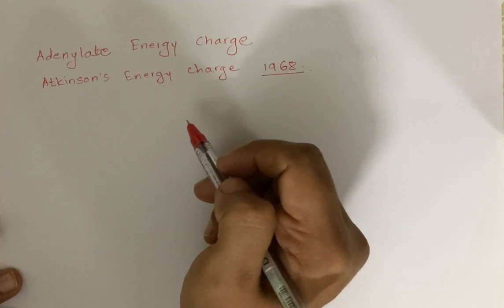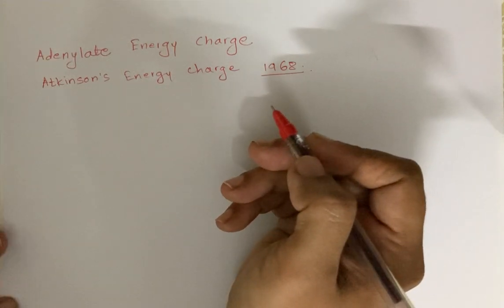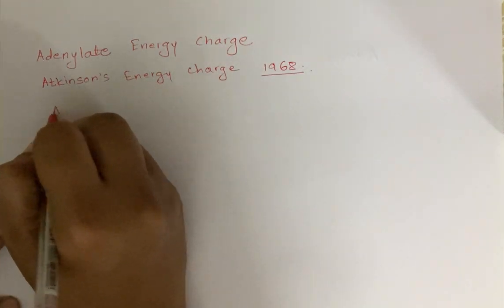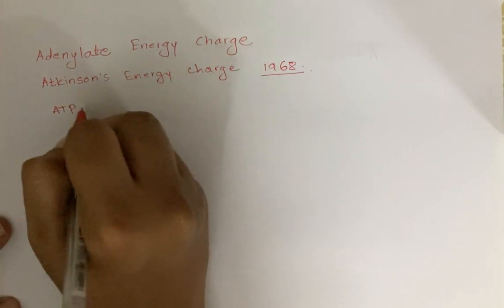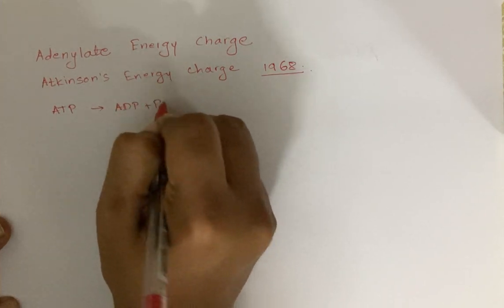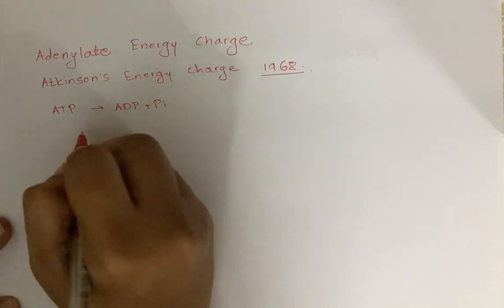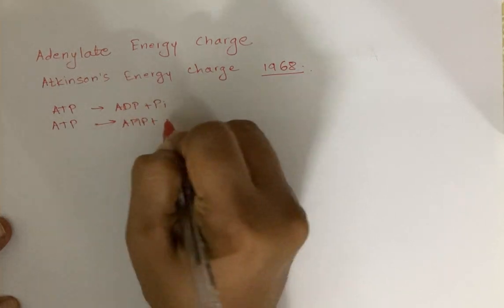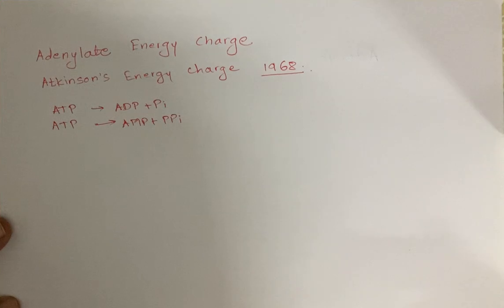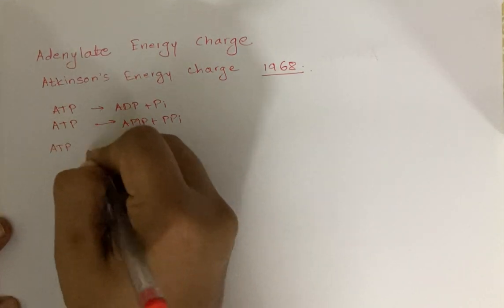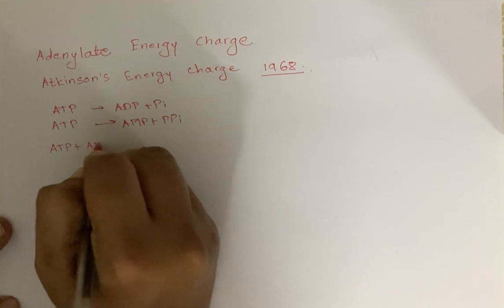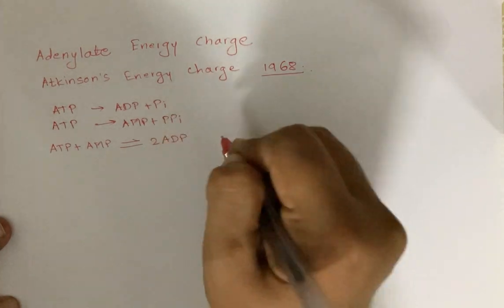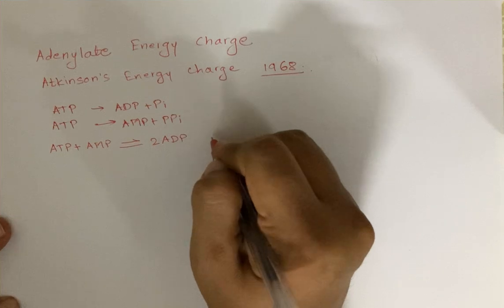We need to understand that energy is present in many forms in a cell. ATP gets converted to ADP plus inorganic phosphate (Pi). ATP can also give AMP plus pyrophosphate (PPi). Additionally, ATP can react with AMP to give two ADP molecules — a reaction catalyzed by adenylate kinase.